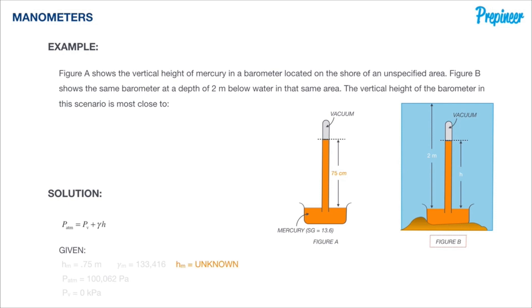So we don't know the height. We do know the atmospheric pressure is 100,062 Pa, which we just determined. And we also know that the weight of the water column is equal to the specific weight of water times the height, which is 2 meters. Specific weight is 9810.